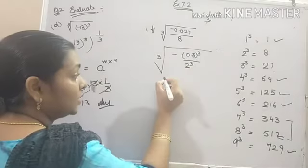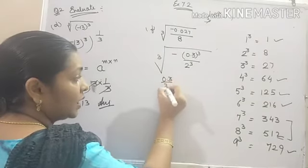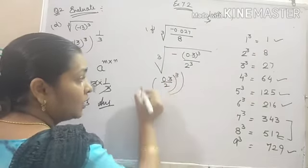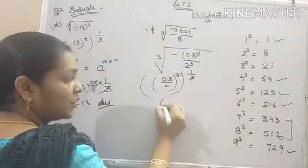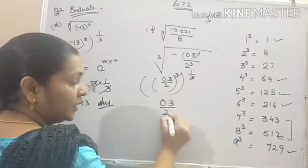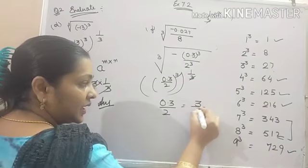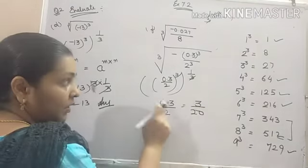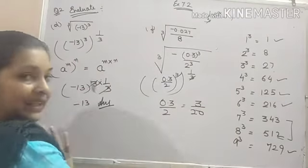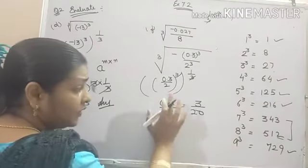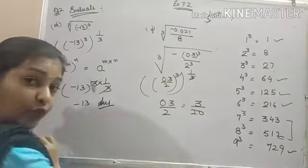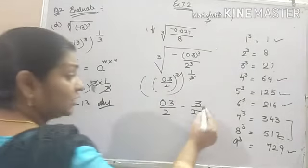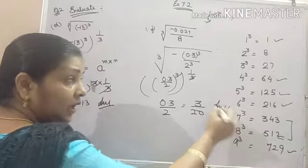Now this is equal to 0.3 upon 2 whole cube raised to the power 1 by 3. If we cancel out 0.3 by 2, it can be written as 3 by 20, because we remove that decimal sign. Whenever we remove the decimal sign and there is one place, we put 10. So 3 by 20 is our answer.